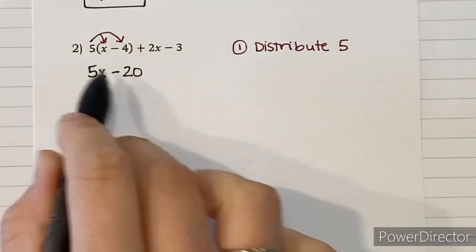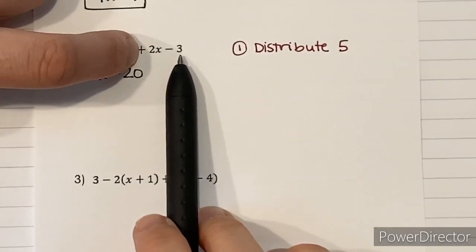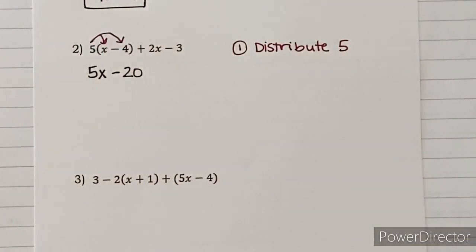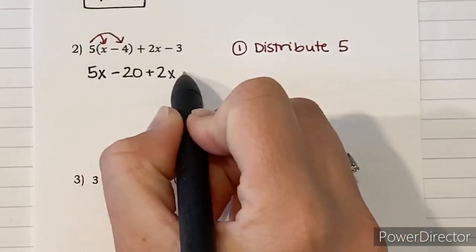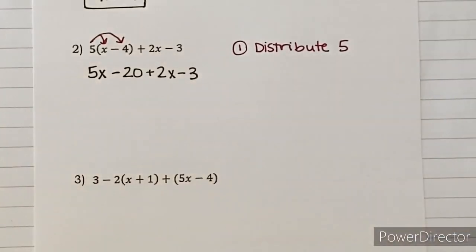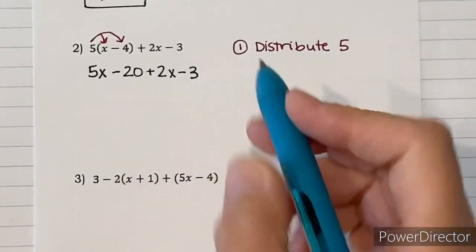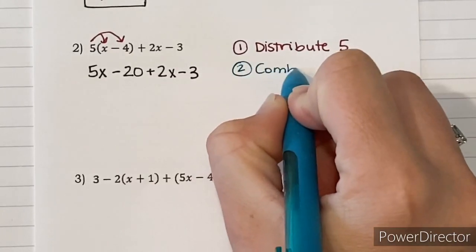That gets rid of the parentheses. I have 2x minus 3 at the back that I didn't touch, so I just bring it straight down: plus 2x minus 3. Now that I've cleared the parentheses, I need to combine like terms — I've got some terms with x's and some numbers that need to be taken care of.